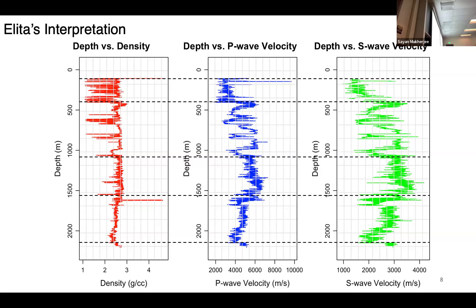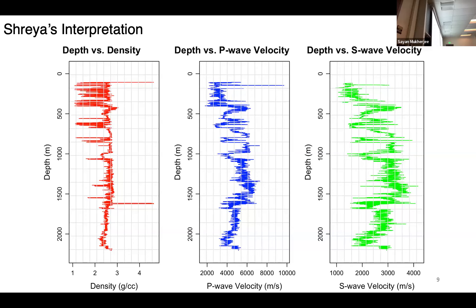From the well logs, we're using density, P wave, and S wave velocity, and we do the manual interpretation, which is Elita's interpretation. This is from the eye of a geophysicist, and she's identified these four sublayers from my 2,000 meter profile. She got these four layers with pattern recognition from the eye of someone who knows signal processing.